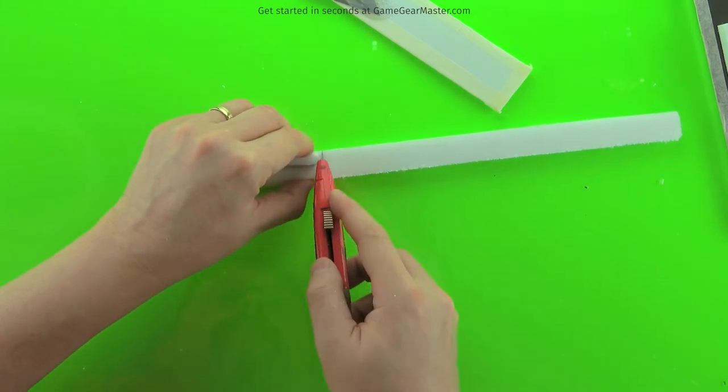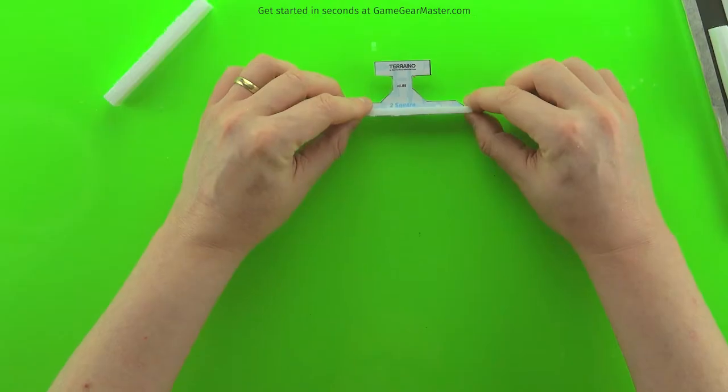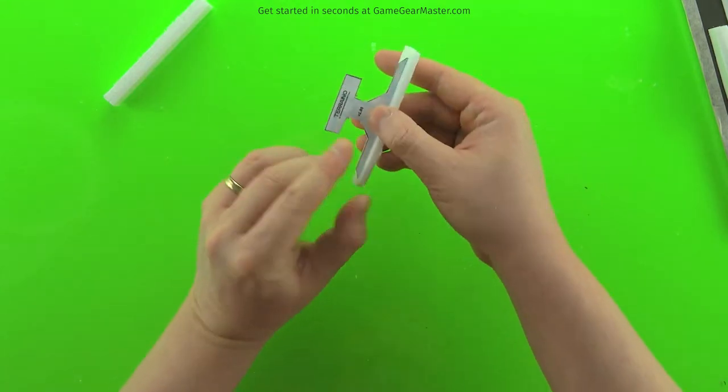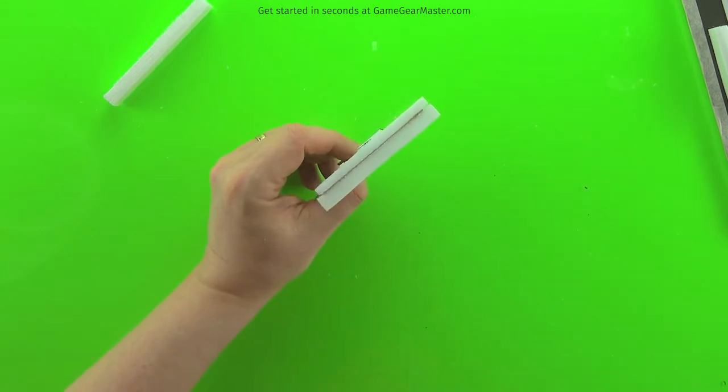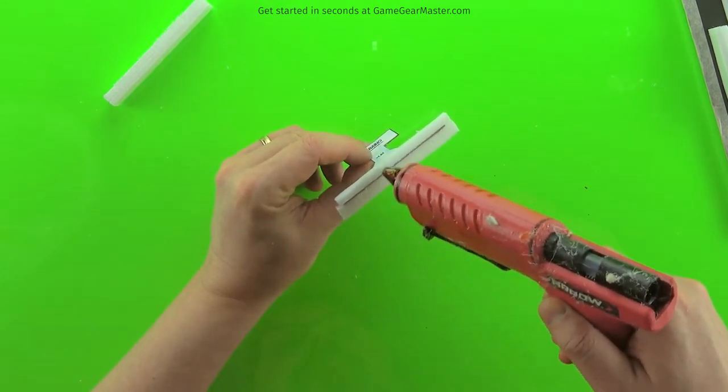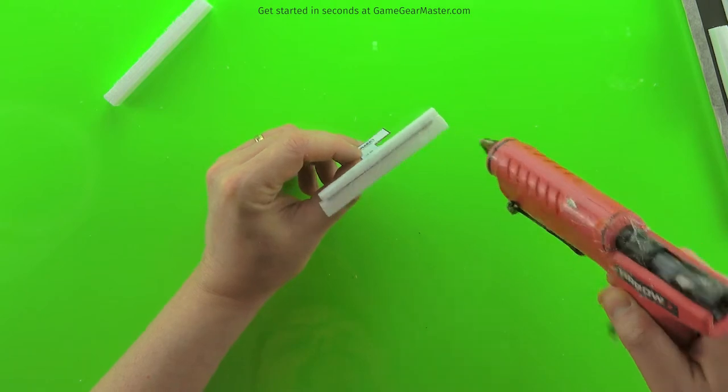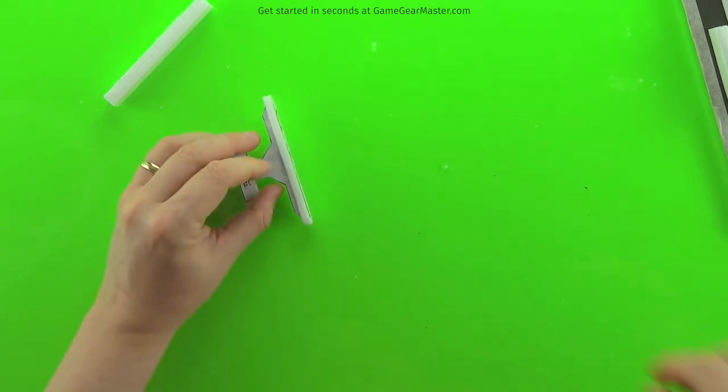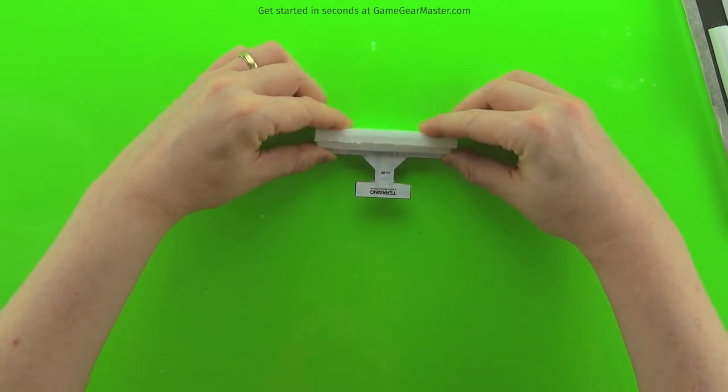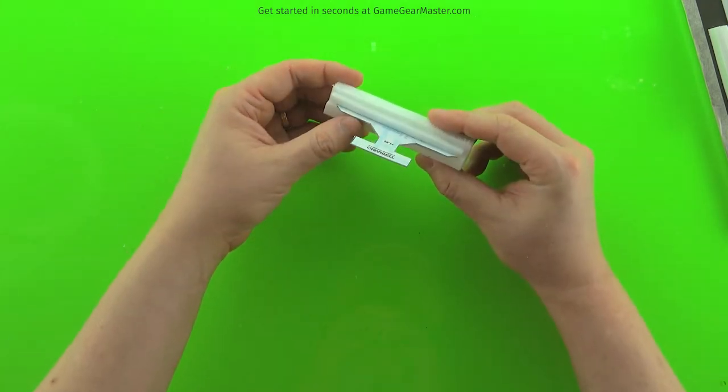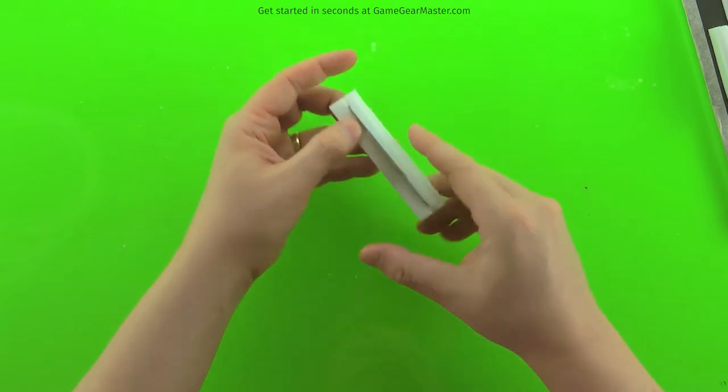And then you're going to glue that on, making sure that the thicker of the two sheets of foam board are on the bottom of the border. You want to have that thick piece facing down. Just glue on the exterior decorative border. There you go.